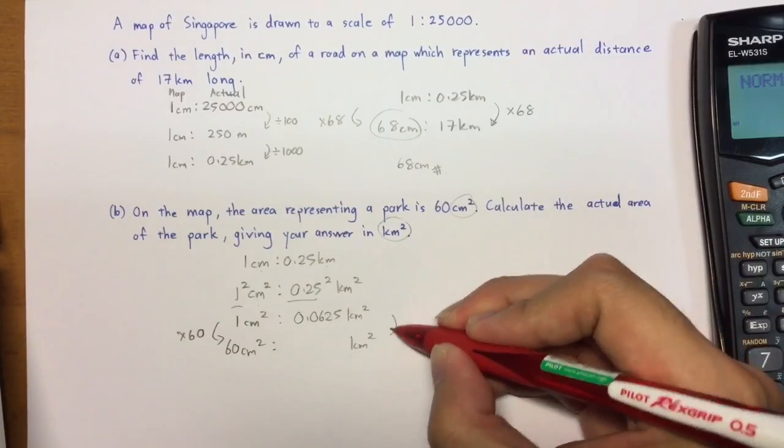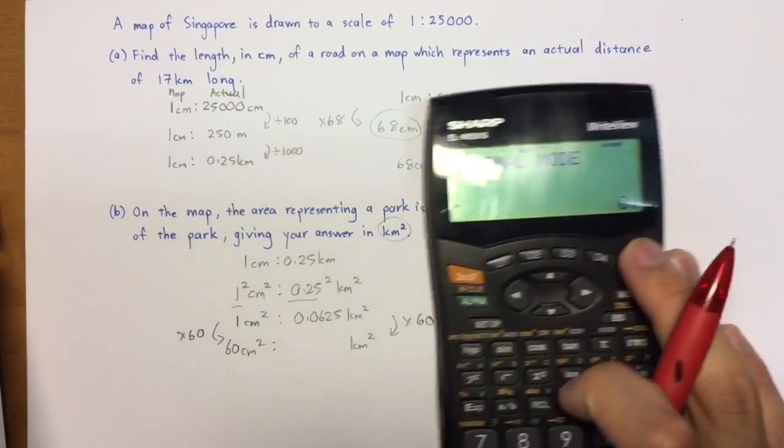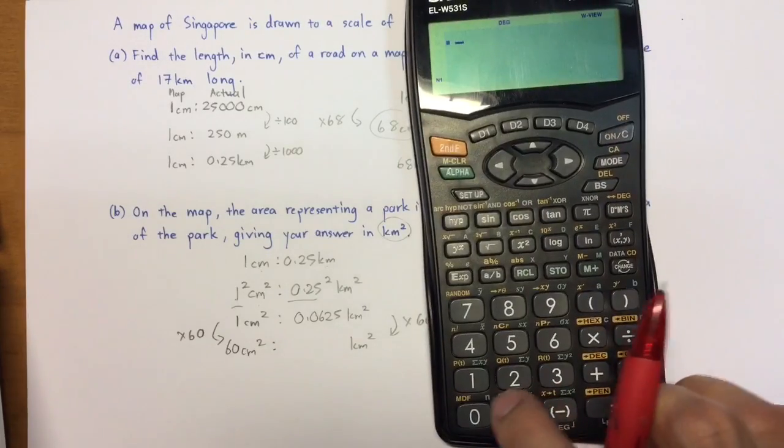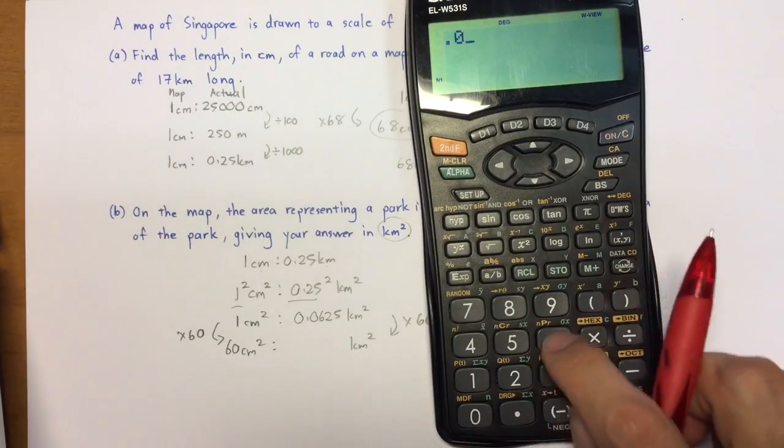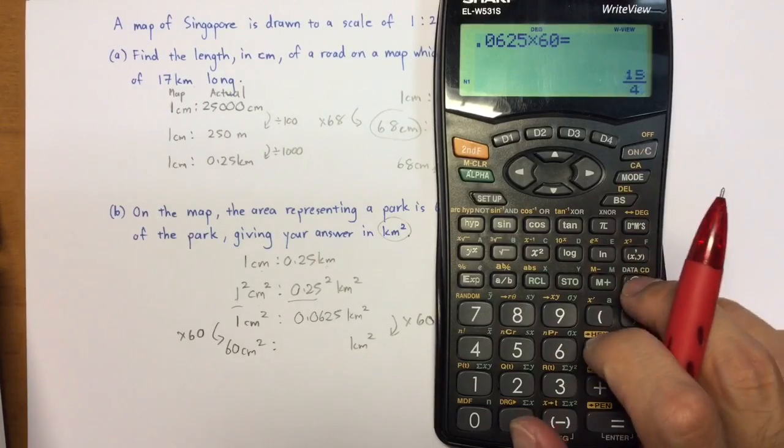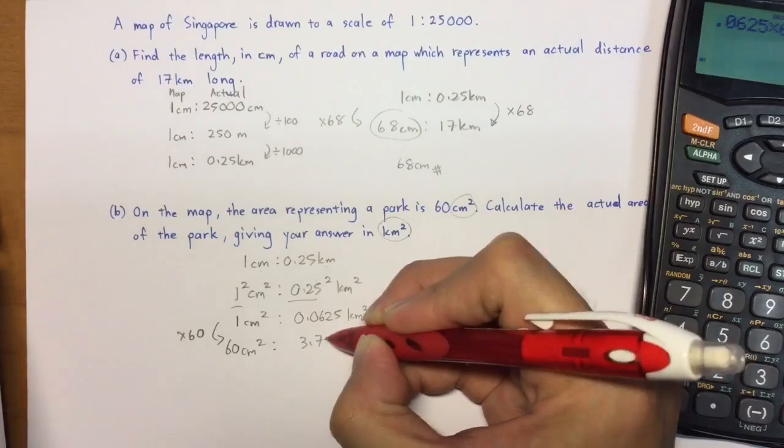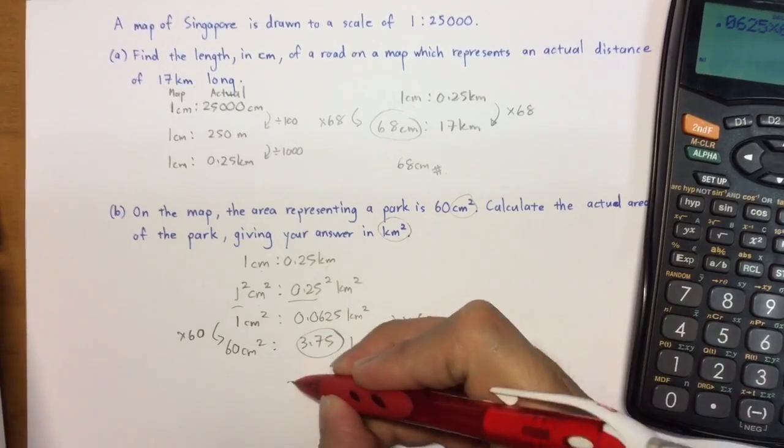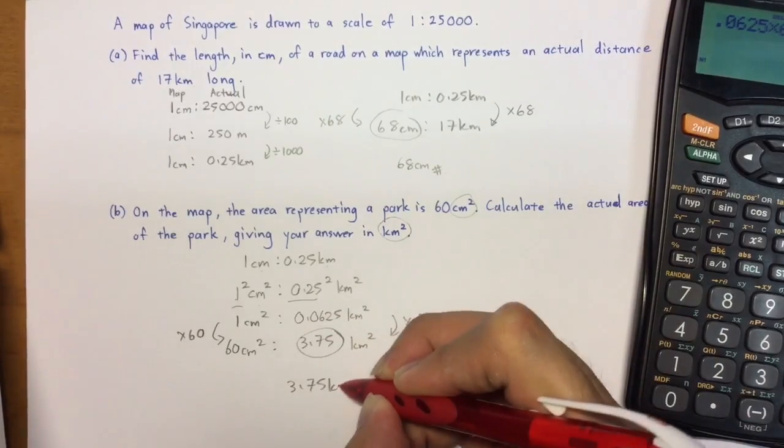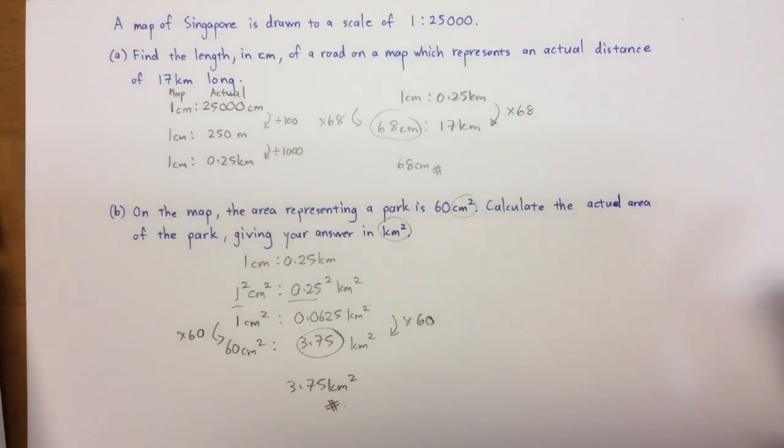So I'm going to do the same on this side. So what will I get? 0.0625 multiplied by 60. What you get here is 3.75 km². So the answer is 3.75 km². That's the actual distance, actual area of the park.